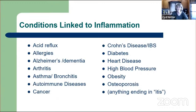I had three slides listing all the conditions linked to inflammation, but condensed it down to one. So: acid reflux, allergies, Alzheimer's and dementia, arthritis, asthma, bronchitis, autoimmune diseases where the body begins to attack itself, cancer, Crohn's disease, IBS, diabetes, heart disease, high blood pressure, obesity, osteoporosis, and anything ending in -itis like arthritis, bronchitis, tendonitis, plantar fasciitis. Anything ending in -itis means inflammation is heavily and severely involved.